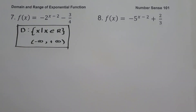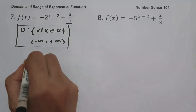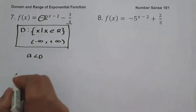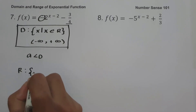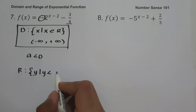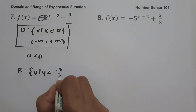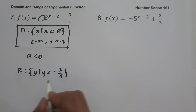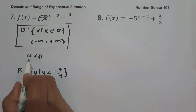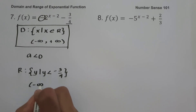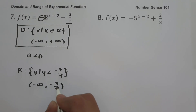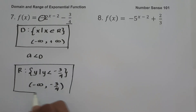Since our horizontal asymptote is negative 3 over 4 and a is less than 0 because we have a negative sign, our range is the set of y values such that y is less than negative 3 over 4. In interval notation, from negative infinity up to negative 3 over 4, where negative 3 over 4 is not included in our solution.